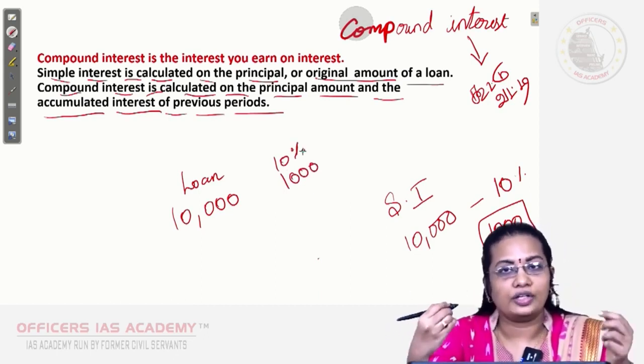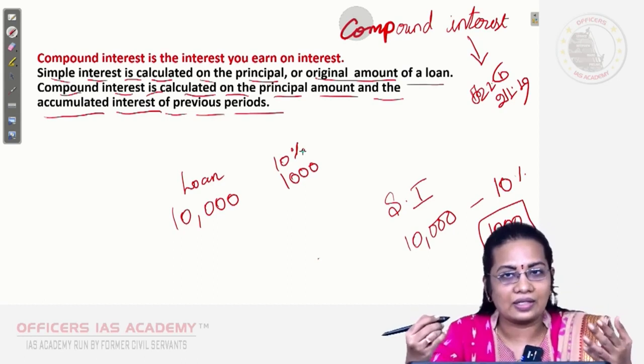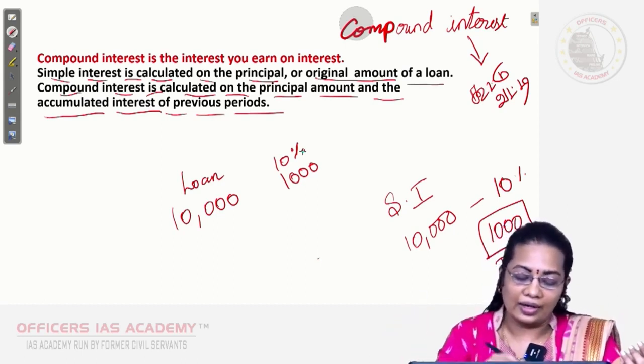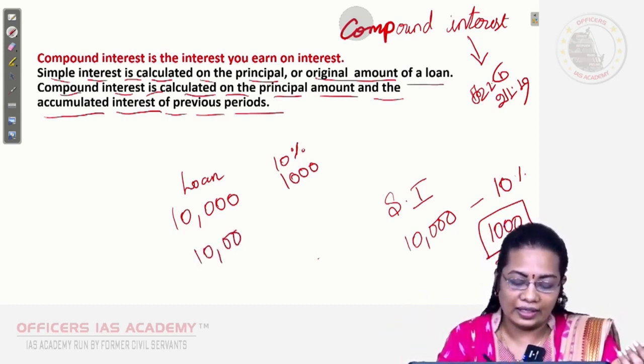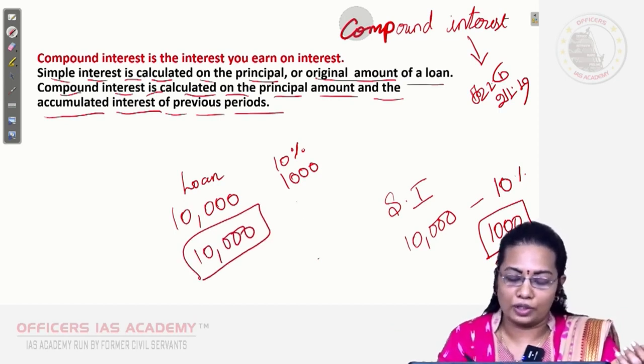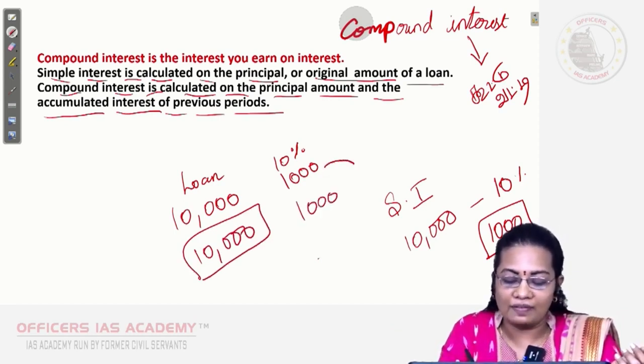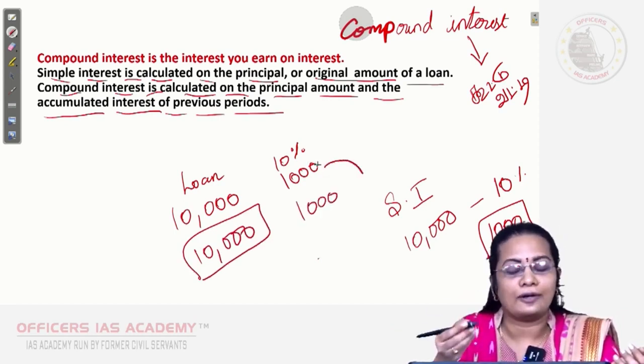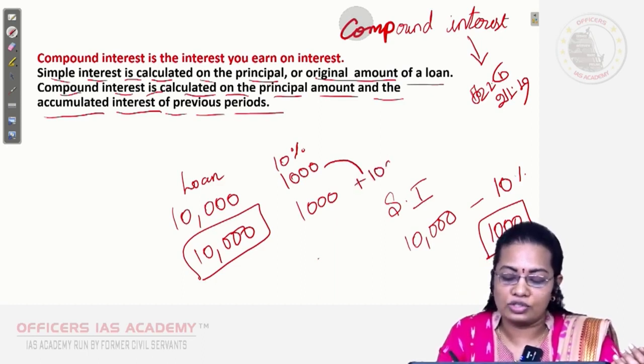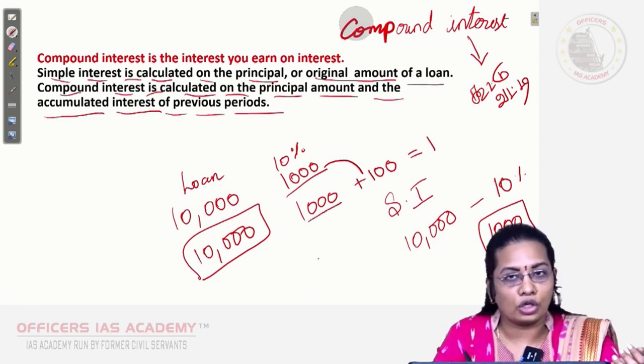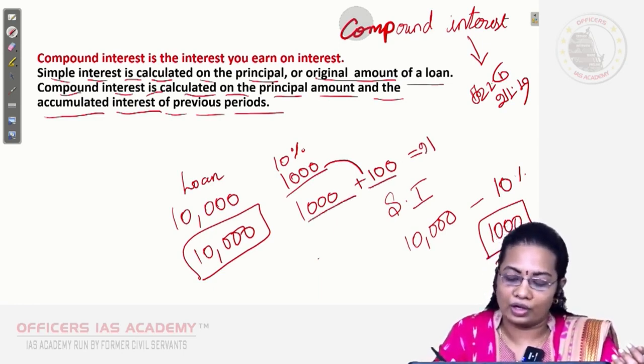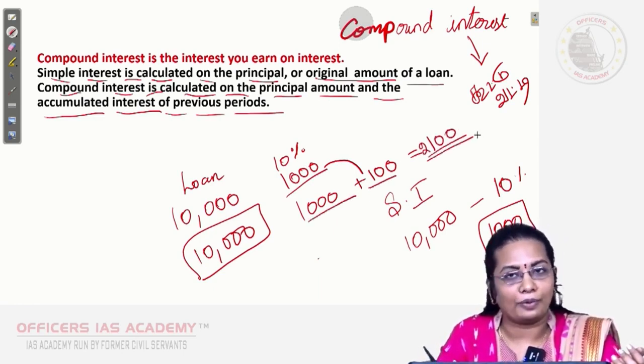If you forget to pay the interest, next year in the second year, you have 1,000 rupees from the previous year, and they charge 10% on that 1,000. So 1,000 plus 100, and the previous 1,000 plus 100, overall 2,100.